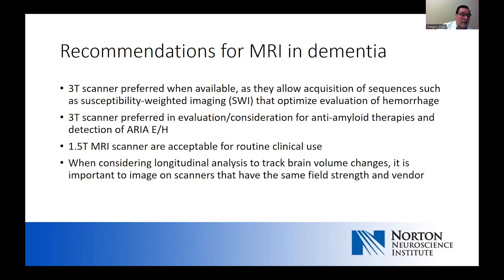With the advent of anti-amyloid therapies, there are additional considerations regarding field strength. If possible, a 3 Tesla scanner is preferred — it allows greater sensitivity, particularly for blood products on susceptibility-weighted images. When considering patients who may be candidates for anti-amyloid therapies, we're quite concerned about white matter disease and microbleeds, so 3T is preferred. One can see additional microbleeds suggestive of amyloid angiopathy on 3T that might not be visible on 1.5T. But for the majority of routine clinical cases, a 1.5T MR is perfectly appropriate.